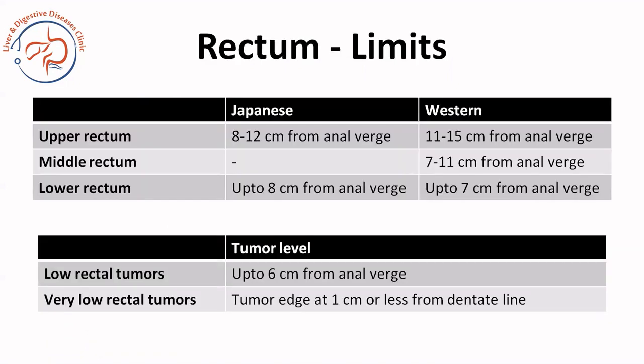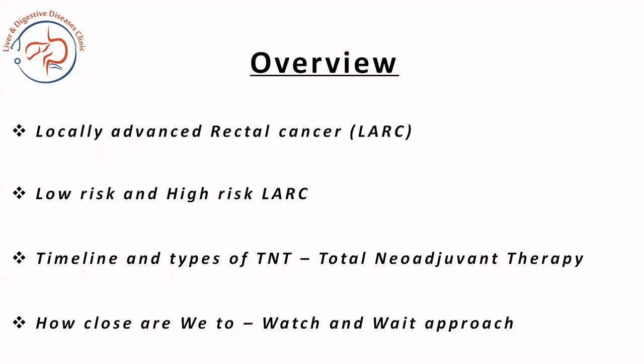You also need to remember the levels of disease. Up to 15 centimeters from the anal wall is included in rectal cancer, where low rectal tumors are up to 6 centimeters from the anal wall, and very low rectal tumors are 1 centimeter or less from the dentate line. Japanese people are shorter and hence their limits are different from the western population — this is important to remember when assessing trials from different parts of the world.